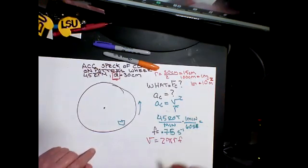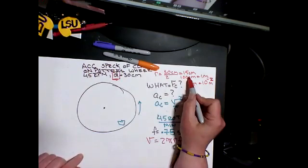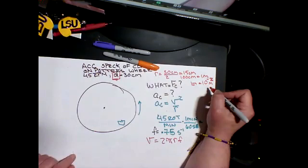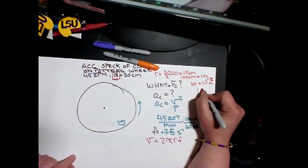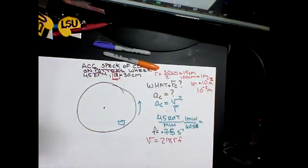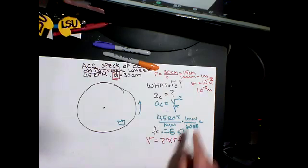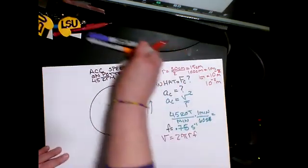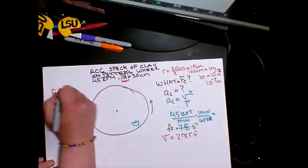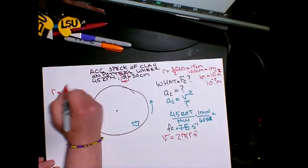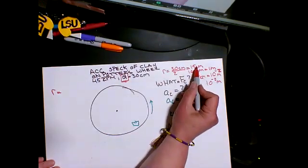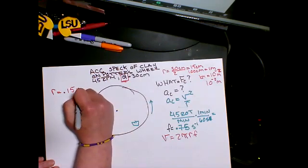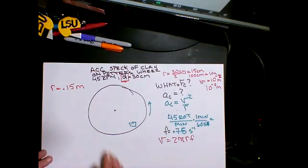Make sure I'm doing that right. Otherwise it would be kilometers, which would be 10 to the 3. So we're 10 to the negative 2 meters. My radius is 15 times 10 to the negative 2, which is just moving the decimal over two places. So 0.15 meters. I have my radius.